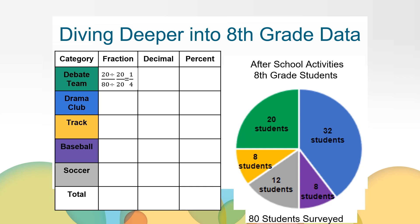Let's look at the drama club. 32 out of 80 students participate in the drama club. I can see that it's close to, but not quite, one half. If I divide the numerator and denominator by eight eighths, I can see that 32 eightieths is equivalent to four tenths. I know that four tenths is also equivalent to 40 hundredths, so I can write the decimal as 0.40. And four tenths or 40 hundredths is also equivalent to 40%. So 40% of eighth grade students participate in the drama club.